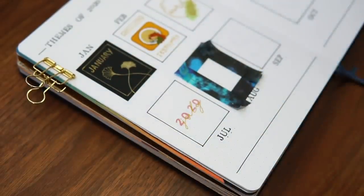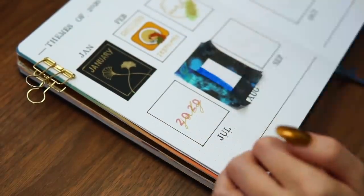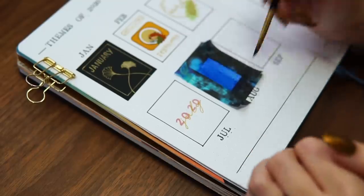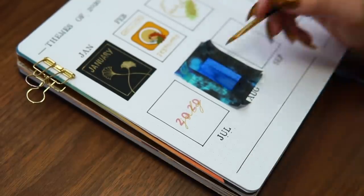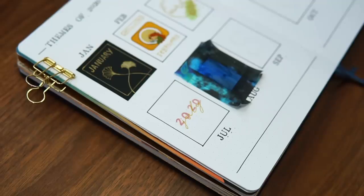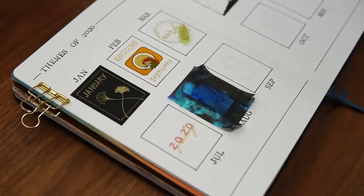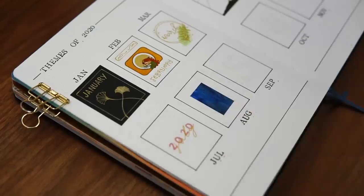And April specifically was a bit of a darker theme because when I was setting up my April spreads, that was really the time that we were realizing that the lockdown was not going to be over in a couple of weeks or a month and that this was a lot bigger of a situation than we'd expected.